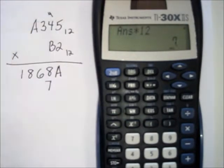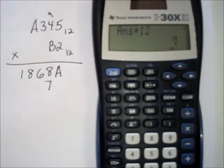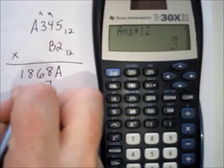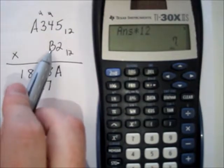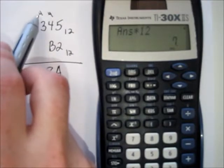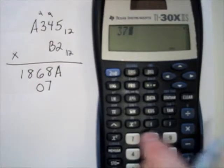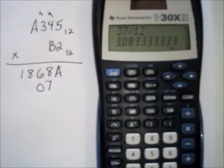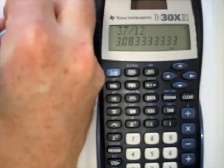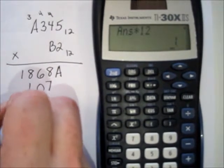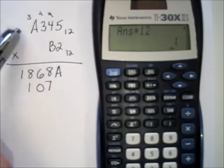Forty-eight is exactly four twelves, so we carry four with zero left over. Eleven times three is thirty-three, plus four more is thirty-seven. Thirty-seven divided by twelve: that's three twelves — subtract the three and multiply by twelve to find the remainder is one.